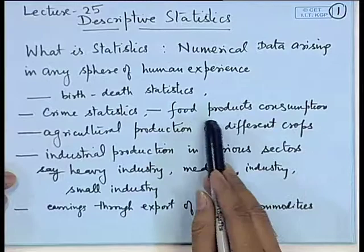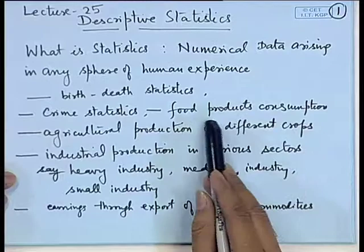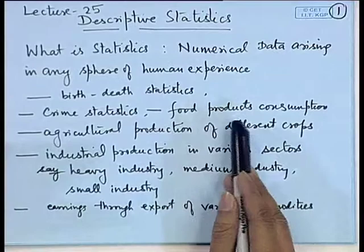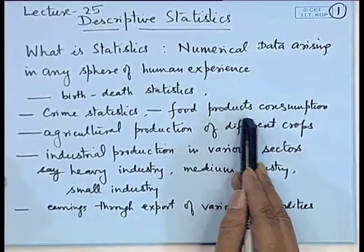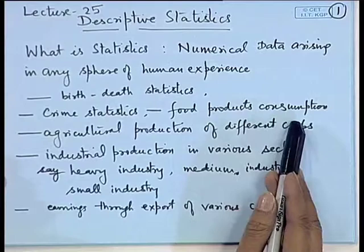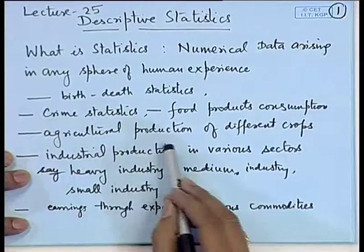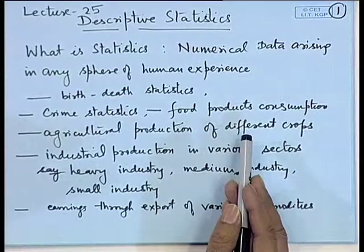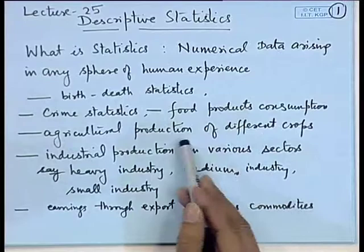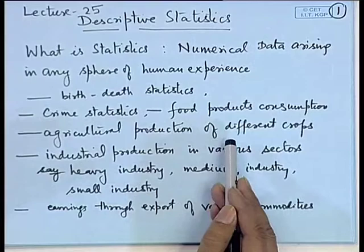A certain market may keep record of the consumption of food products of various types — for example, what is the market for South Indian dishes or for Chinese dishes. The data on that comes under food product consumption. Government regularly keeps the record of agricultural production of different crops — how much production there will be for wheat, rice, or pulses. This type of information is extremely important for making policies by the government.